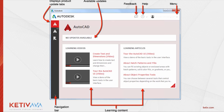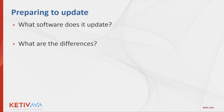Before you actually go and get the desktop application, there are some things to consider. One question customers ask is what software does it update. The answer is any software that is 2015 released or newer will get their updates from the desktop application. If you're using 2014, 2013, or anything older, it may be best practice to keep the application manager until you're ready to update. That said, you can always Google 'AutoCAD Service Pack 2014' to find those downloads on the Autodesk page.